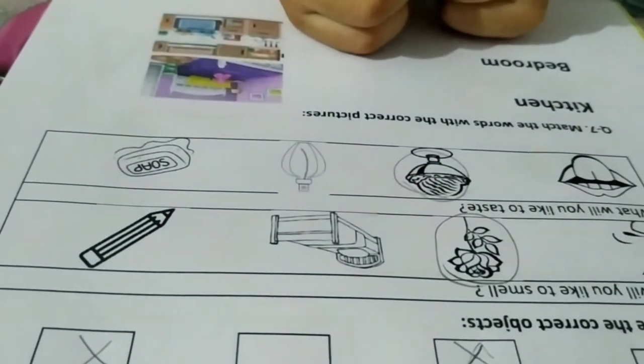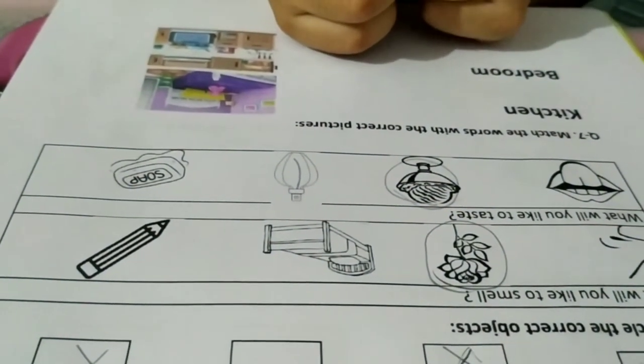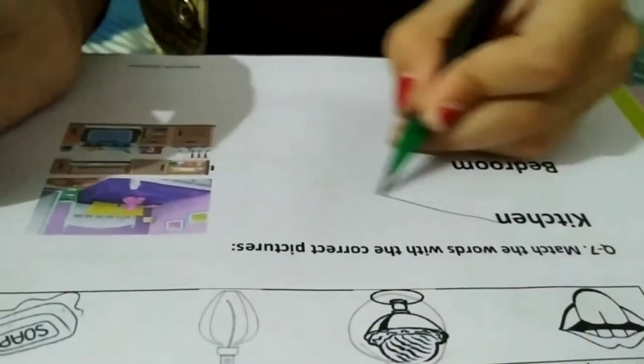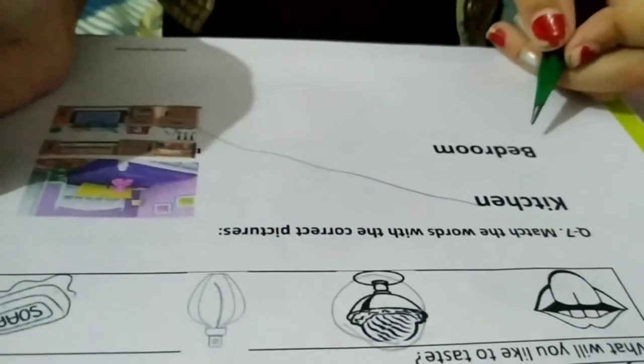Question 7. Match the words with the correct pictures. Kitchen. Bedroom.